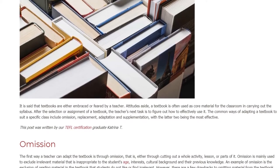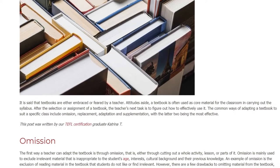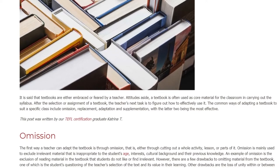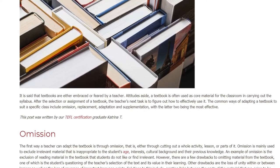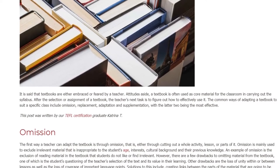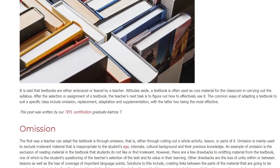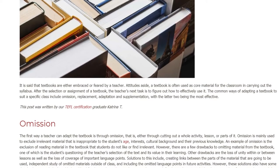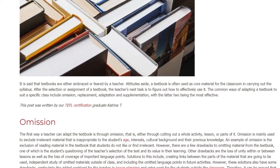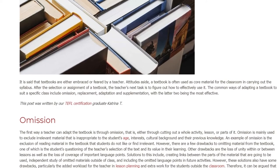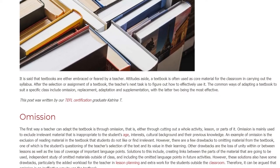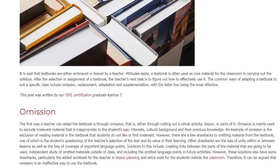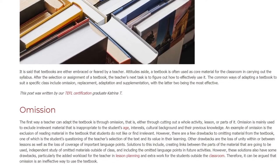Omission. The first way a teacher can adapt the textbook is through omission — that is, either through cutting out a whole activity, lesson, or parts of it. Omission is mainly used to exclude irrelevant material that is inappropriate to the student's age, interests, cultural background and their previous knowledge.